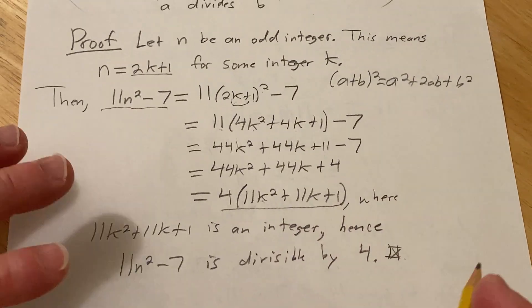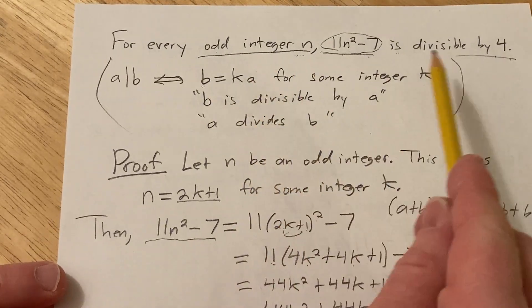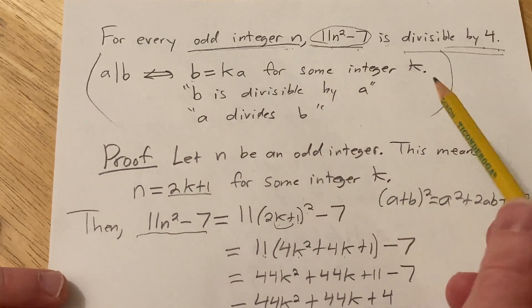So really not a hard problem. You just have to know what this means, right? So right here, what this means and what this means. And then you just have to know proof structure.